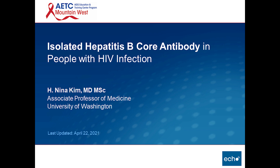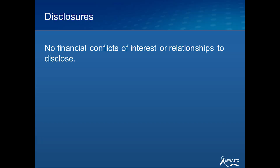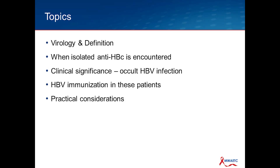Brian asked me to reprise my talk because isolated hepatitis B core antibody in people with HIV is a vexing and perplexing topic for many clinicians. This is an update on the one I gave several years ago. I have no disclosures. The key points I want to cover today: we'll walk through some virology and definitions, talk about the scenarios that lead to the serologic profile, and go over the clinical implications, especially with respect to occult hepatitis B and hep B immunization.